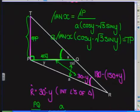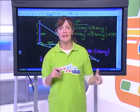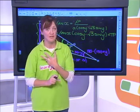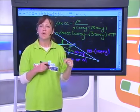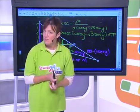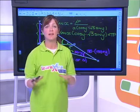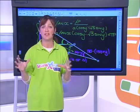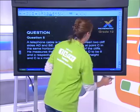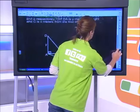Now using the right-angle triangle with angle x: tan x = TP/PQ (opposite over adjacent). Therefore TP = tan x × a(cos y − √3·sin y) = a·tan x·(cos y − √3·sin y), which completes the proof. The key steps were: find missing angles, spot the pair for the sine rule, expand the compound angle, apply special angle values, then use trig ratios in the right-angle triangle.